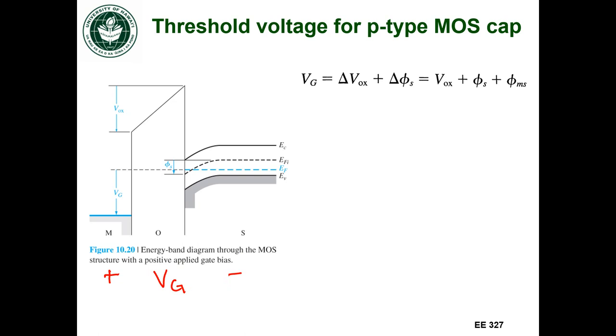If we want to write an equation for that bias, that's according to this equation that's written on that slide. And this corresponds to our threshold voltage. So we're going to denote this special voltage as Vg is equal to Vtn.